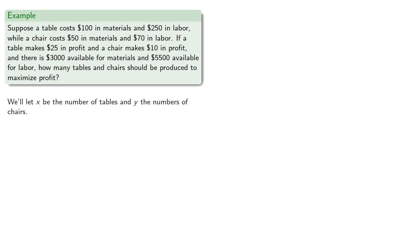We'll let x be the number of tables and y the number of chairs. If we make x tables and y chairs, then the profit will be, the materials cost will be, and the labor cost will be.